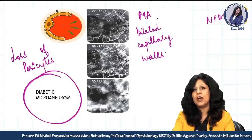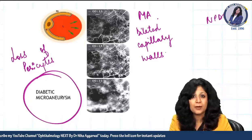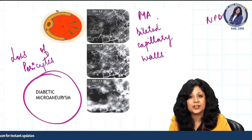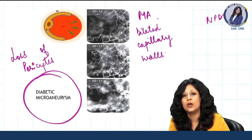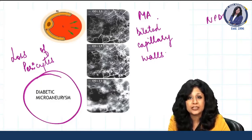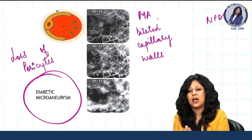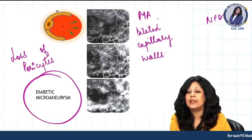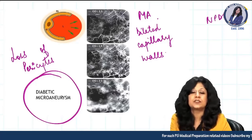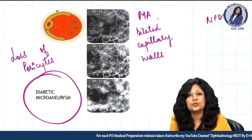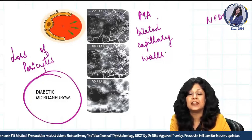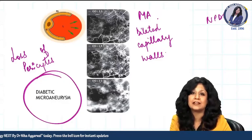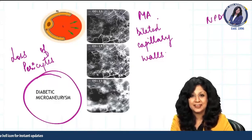I hope you now have a general idea of angiography — no fear about it. The simple concepts are: which dye to inject, where to inject, what are the phases, what is normal, what is abnormal — whether hyper or hypo fluorescence — and what conditions give hyper versus hypo. Also remember certain important patterns: flower-petal appearance, enlarging dot sign, and mushroom pattern. Thank you and all the best.